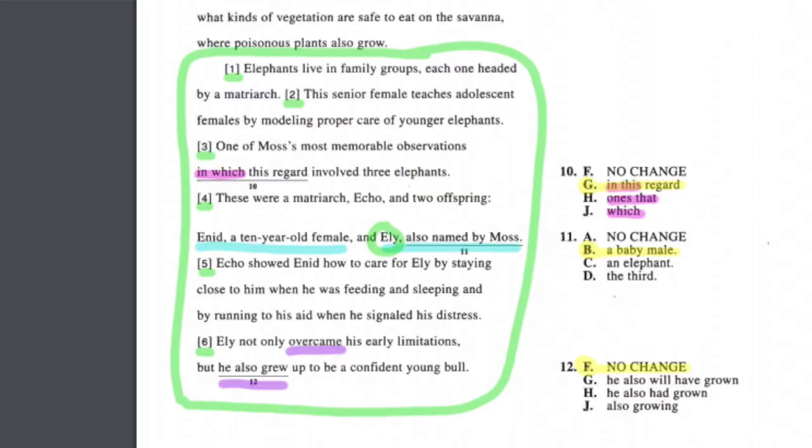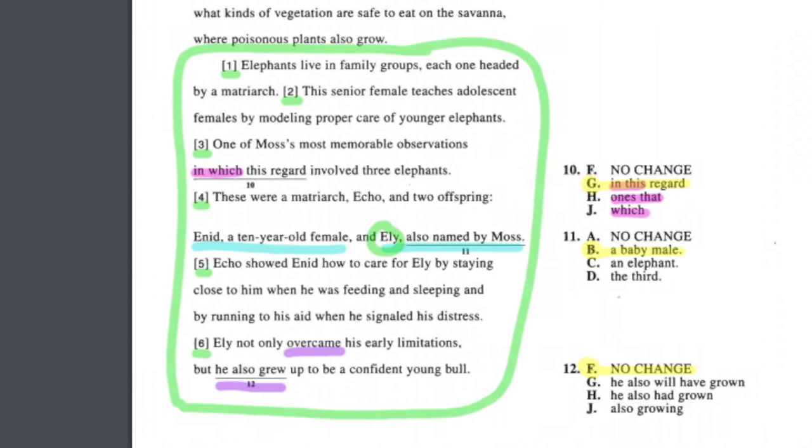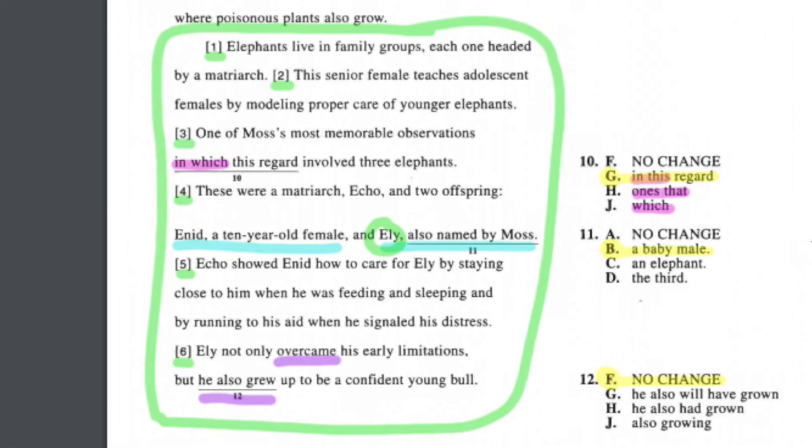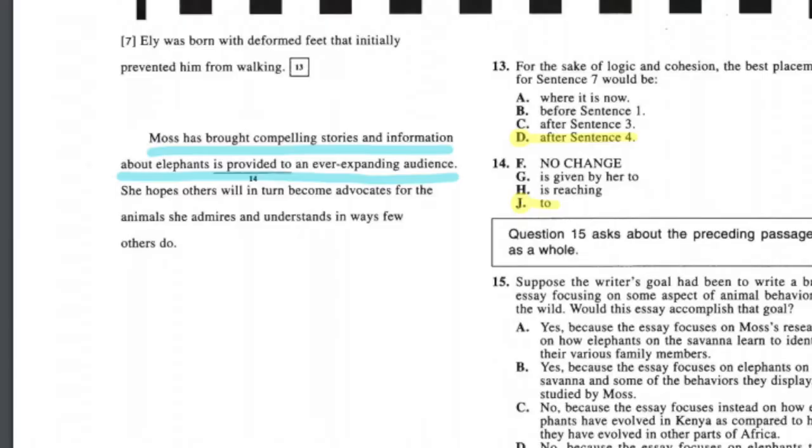The last three questions are rhetorical, usually near the end of the passage. Question thirteen involves the sentence 'Eli was born with deformed feet' and asks where it should be placed in the paragraph. We shouldn't introduce Eli's deformed feet before introducing Eli — so options B and C, which place it before Eli is even mentioned, are wrong. Option A puts it at the very end, option D puts it after sentence four. Reading the paragraph, it talks about Echo teaching her offspring to care for Eli due to his early limitations. We need to explain that limitation after introducing Eli and before saying he overcame it — so D, after sentence four, is correct.